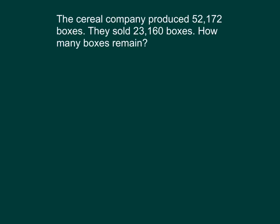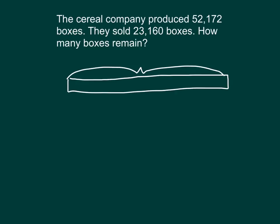Let's solve a word problem. Read it with me. The cereal company produced fifty-two thousand one hundred seventy-two boxes. They sold twenty-three thousand one hundred sixty boxes. How many boxes remain? Let's draw a tape diagram to represent the boxes of cereal that the company produced and sold. How many did they produce? That's our bigger number. That's the one that we are subtracting from. And so this is the amount that was produced.